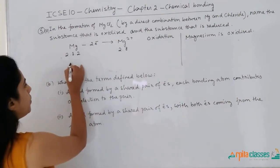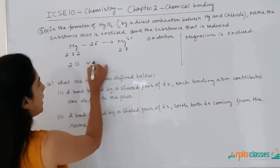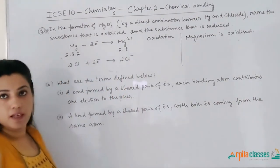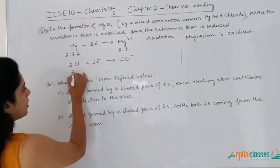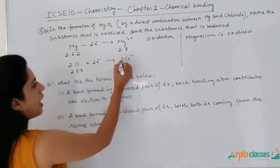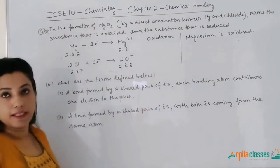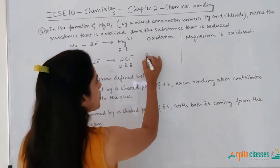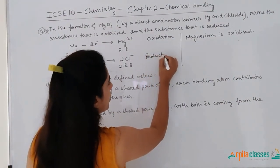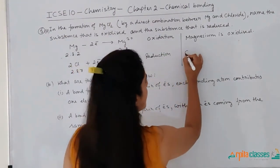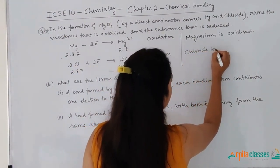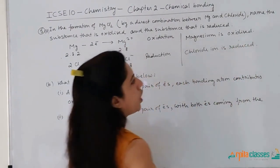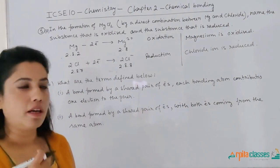On the other hand, 2Cl atoms will each gain one electron to convert into 2Cl⁻. The electronic configuration of chlorine is 2, 8, 7; after taking one electron it becomes 2, 8, 8. The gain of electrons in the case of chlorine is called reduction. So chloride ion is reduced. In summary, magnesium is oxidized and chloride ion is reduced.